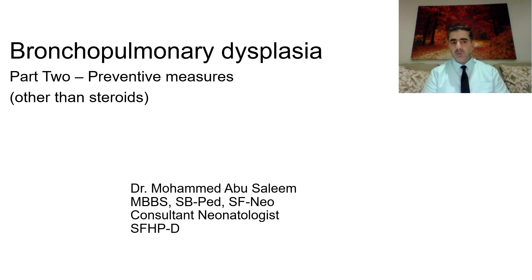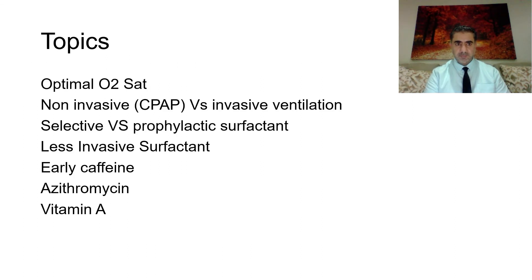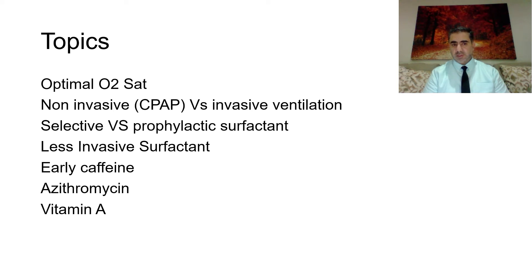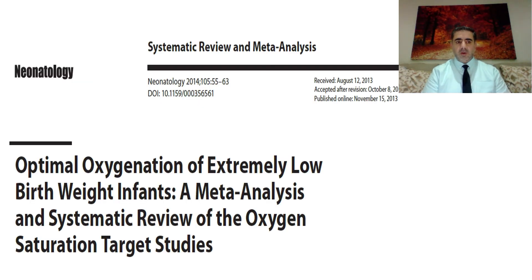This is Part 2 of a talk about bronchopulmonary dysplasia, dedicated to preventive measures other than steroids and the evidence behind each. The topics discussed include optimal oxygen saturation, non-invasive versus invasive ventilation, selective versus prophylactic surfactant, less invasive surfactant administration, caffeine use, azithromycin, and vitamin A.